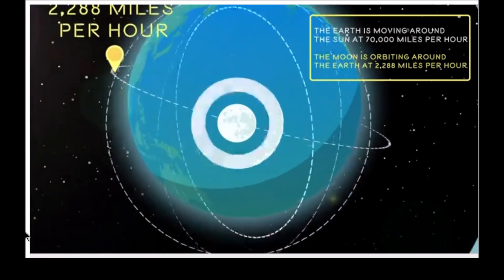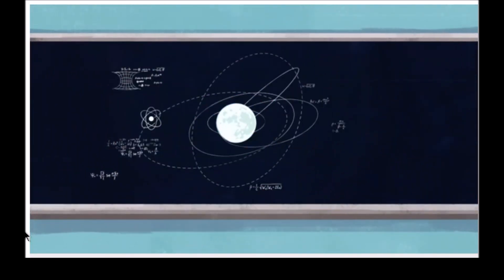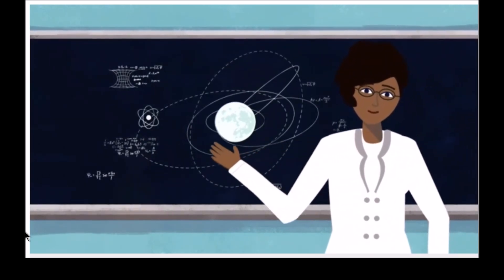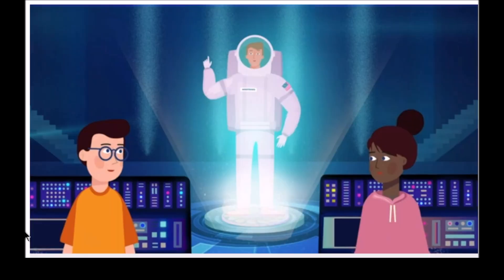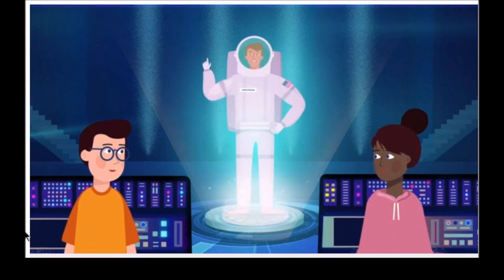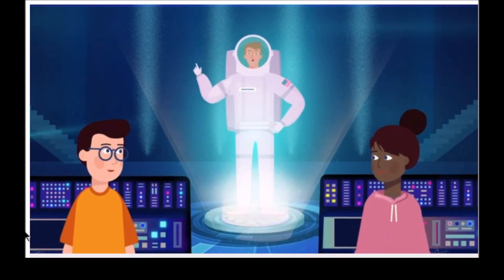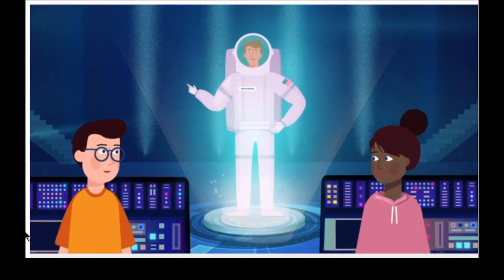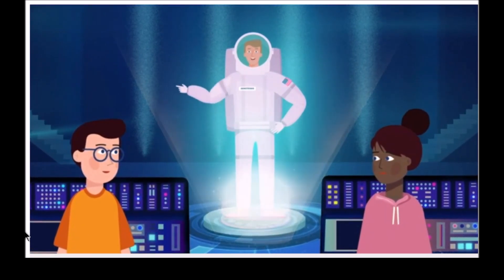The math that allowed us to calculate the route to the moon was so complicated that NASA had to get some of the best mathematicians in the world to figure it out, like Katherine Johnson. She was very clever and got us there safely. If she'd made a single mistake in the calculations, we might not have come home at all. Our lives were in her hands.